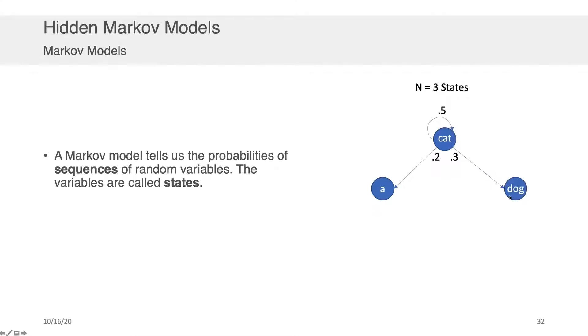Now Markov models have something called transition probabilities, so for each of the states I can define what the probability of the next word is given that I'm in this word. So the way to read this chart is that given that I'm in the word cat and I want to know what the next word is, there's a 30% chance that it will be dog, a 20% chance it's going to be the word a, and then a 50% chance it's going to be the word cat again.